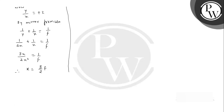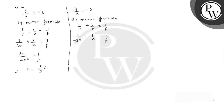Now we substitute y/x as minus 2, so y equals minus 2x. By the mirror formula: 1/(-2x) + 1/x = 1/f, which gives (x - 2x)/(-2x²) = 1/f, that is (-x)/(-2x²) = 1/f, simplifying to 1/(2x) = 1/f. Therefore x equals f/2.